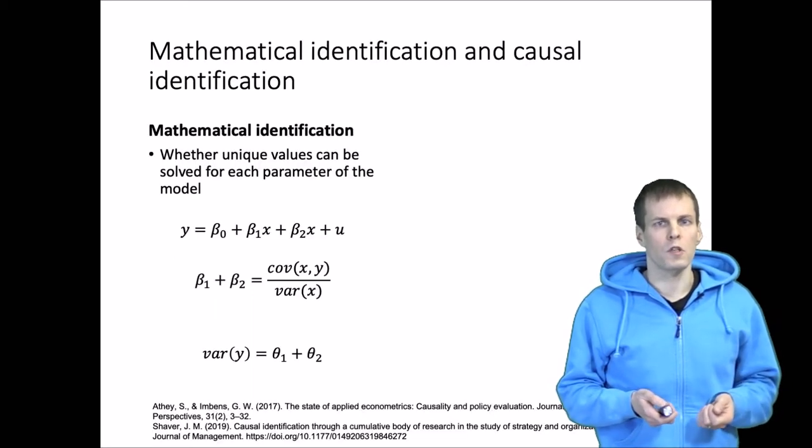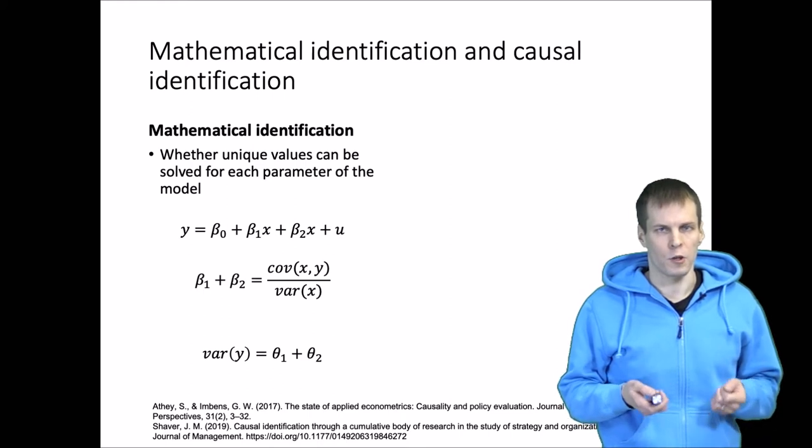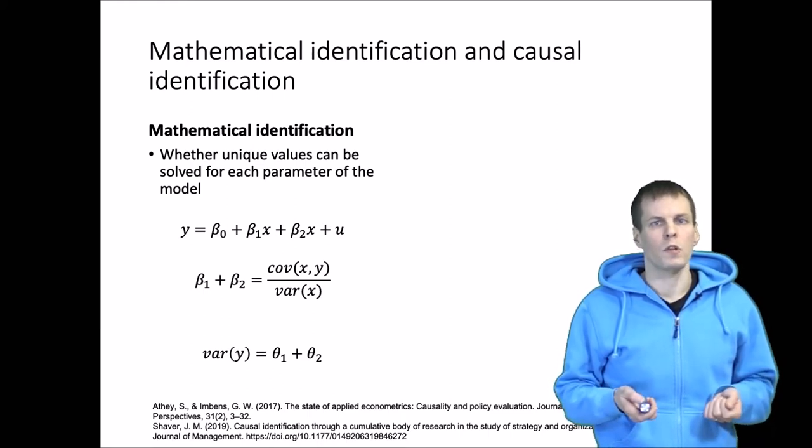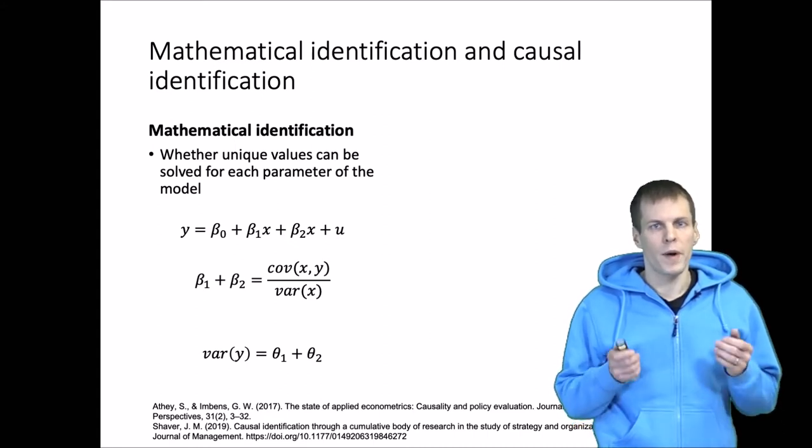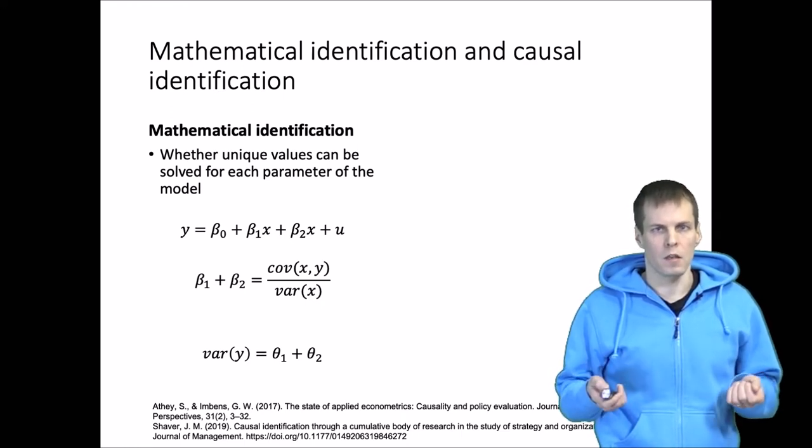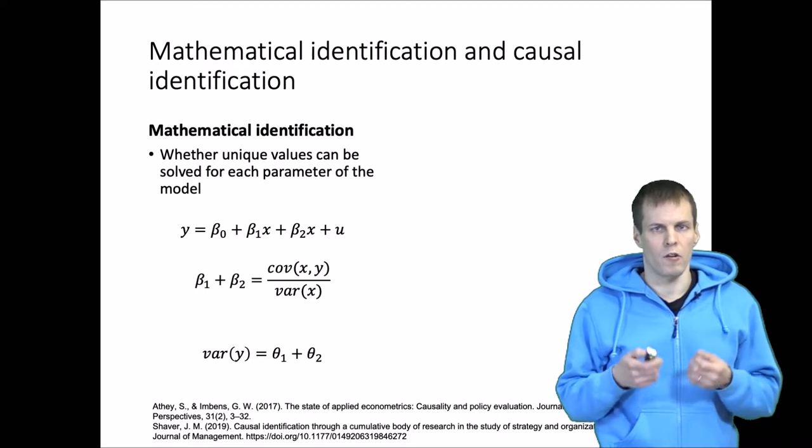The term identification is used in two different contexts in the research methods literature. There is mathematical identification, sometimes incorrectly referred to as statistical identification, which basically refers to whether it is possible to arrive at unique estimates for the model parameters given our data.